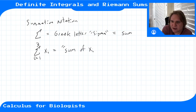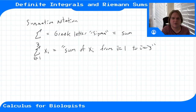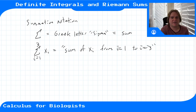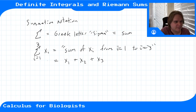This means the sum of x_i from i equals one to i equals three. Since we're starting from one down here, this is i equals one, where i is the index. So what this means is x_1 plus x_2 plus x_3.